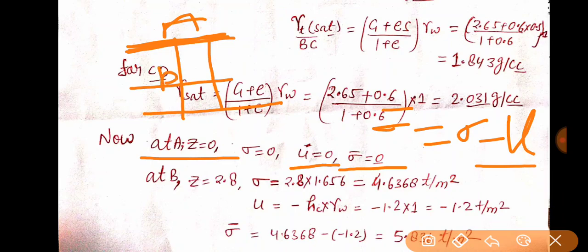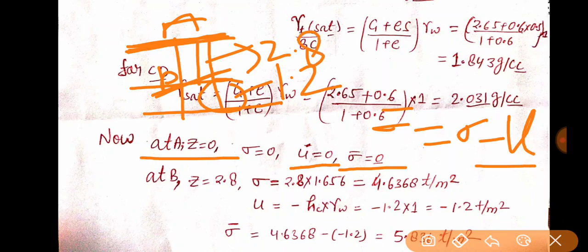Now at portion B — the depth is 1.2 meters reduced from 4, so 4 − 1.2 = 2.8 meters is completely dry. So for B portion, Z = 2.8 m. Total stress = 2.8 × 1.656 = 4.6368 ton per meter square. Now see the most important thing in this question, which I keep saying — the capillary effect will change everything.